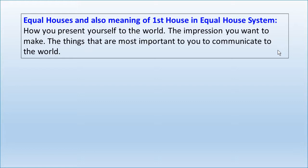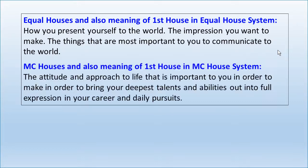Houses may seem a little more vague than the aspect patterns and midpoint configurations, but they're having a big impact on the way the person functions and how they orient themselves to life in general. The equal houses is about the impression we want to make. It has a lot to do with our identity, how we want to be in the world, what statement we want to make. The first house in any of these house systems encapsulates the fundamental meaning — what you want to communicate, what you want to say, what you want to share, what you want to bring to the world.